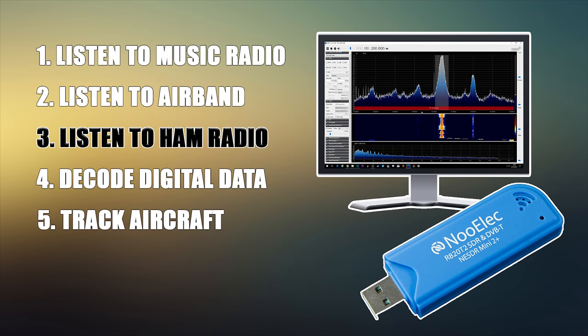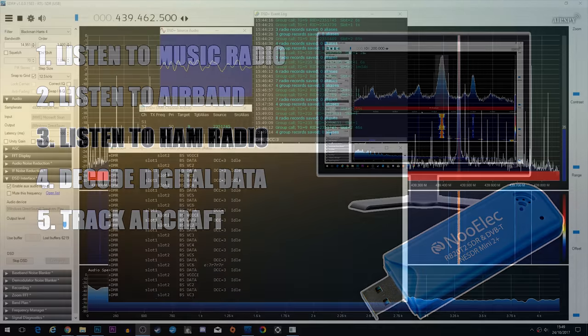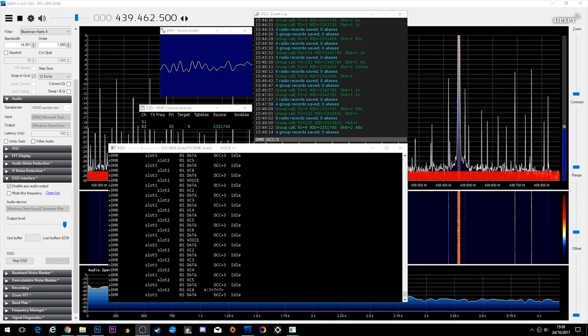Next on the list we have listening to ham radio. There are different bands and different frequencies and different modes of listening to ham radio using this NooElec SDR receiver. We're able to listen to three different bands: six meters which is 50 MHz, two meters which is 144 to 148 MHz here in the UK, and also 70 centimeters which is 430 to 439 MHz.